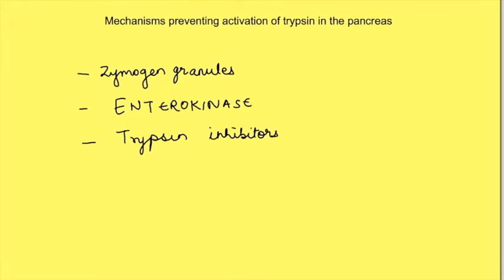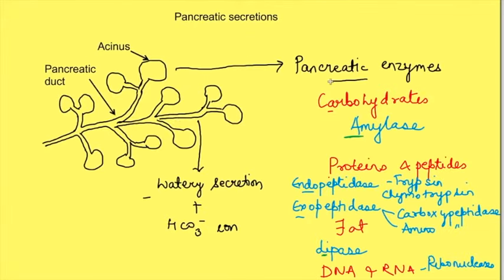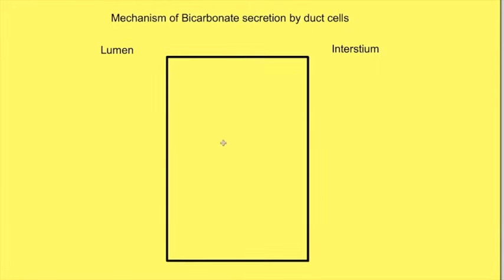So till now we had discussed acinar secretions of the pancreas. Now let us discuss the mechanism of watery secretion and bicarbonate ion secretion by the pancreatic duct cells. This diagram shows duct cell, left side is lumen of duct and right side is basolateral side.